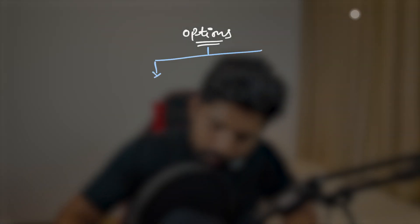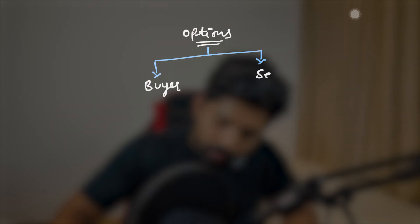Now let's move to options. We have understood multiple times that in options we have two characters. One is the option buyer and another is the option seller. In options, we have a call option — and in the put option, if the price decreases, you will be in benefit.